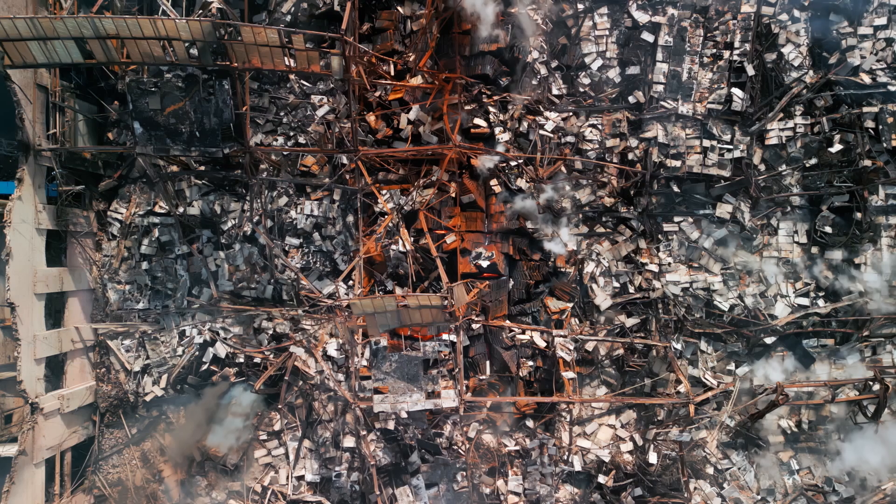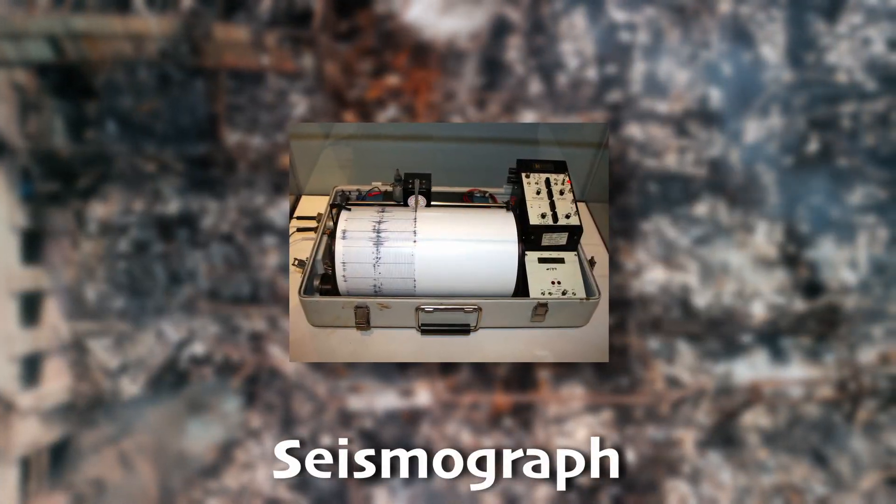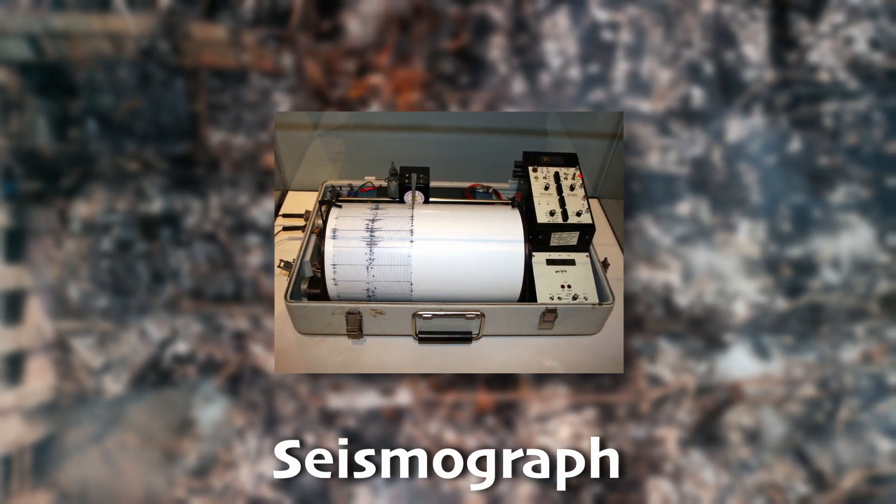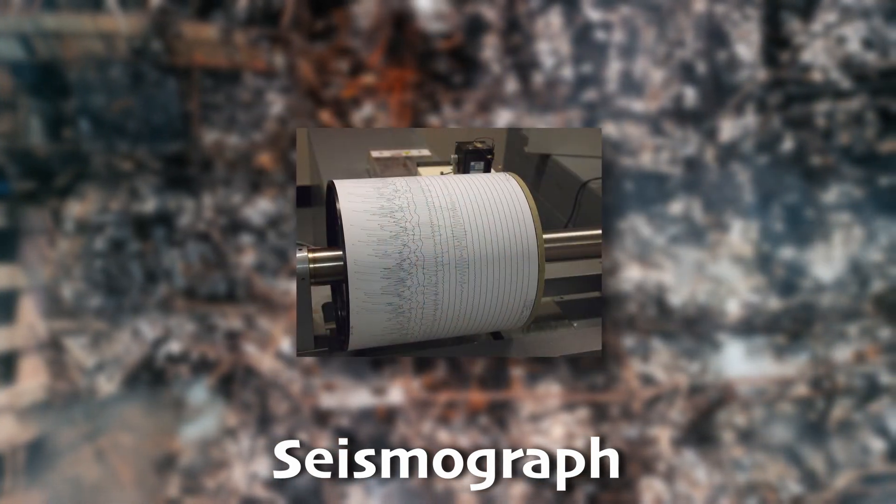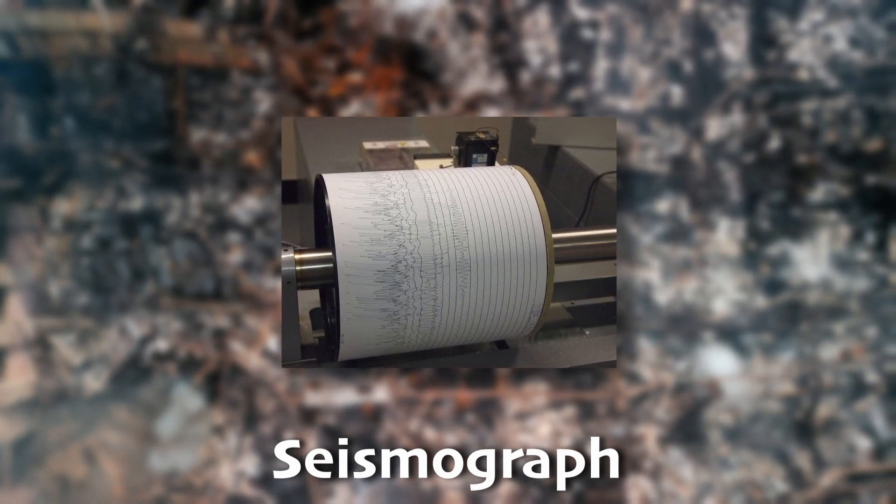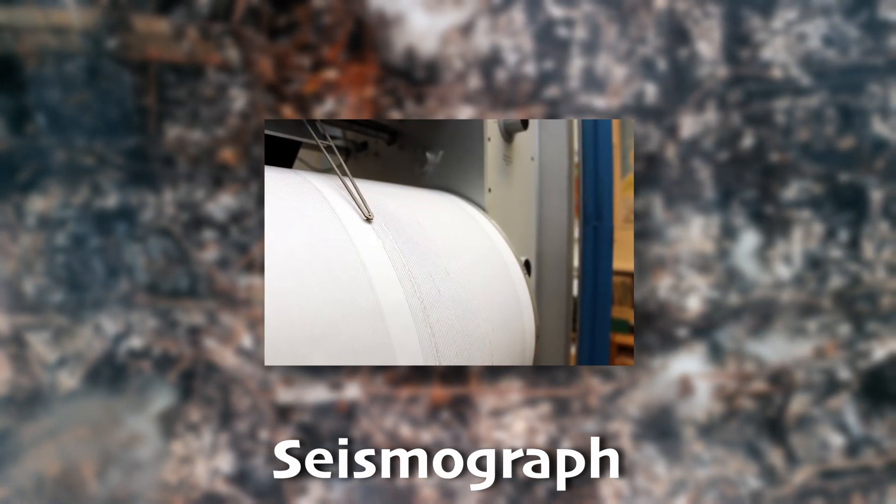To actually measure earthquakes, scientists use tools called seismographs. A seismograph records the vibrations in the ground. When an earthquake happens, it sends out waves that travel through the earth, and these waves shake the seismograph. It has a pen that stays still while the ground and paper under it shake during an earthquake, drawing squiggly lines that show the vibrations.